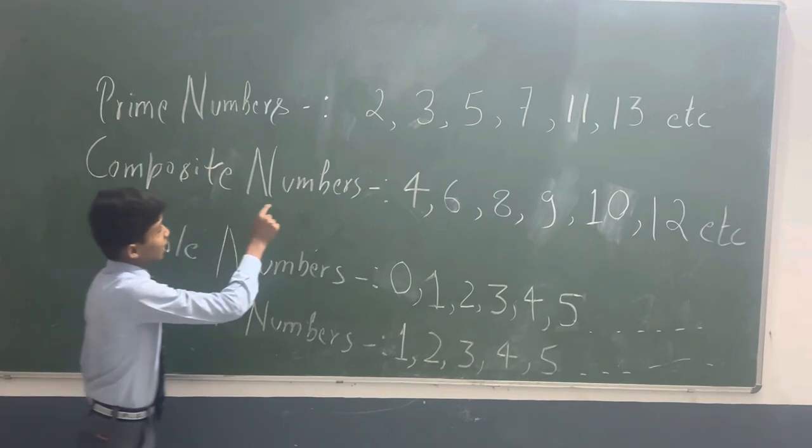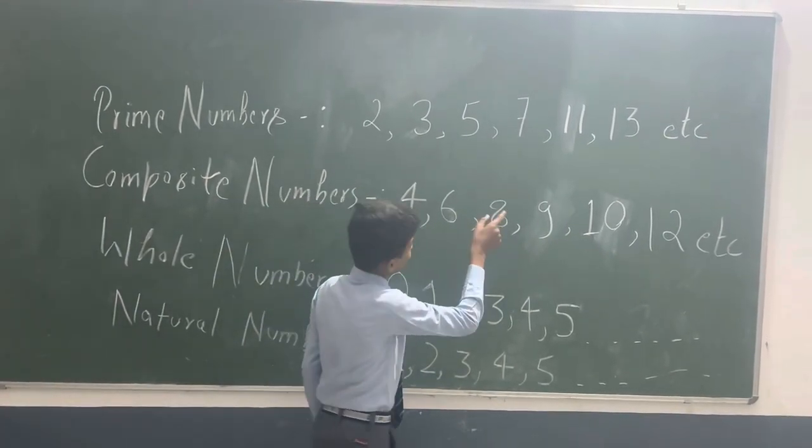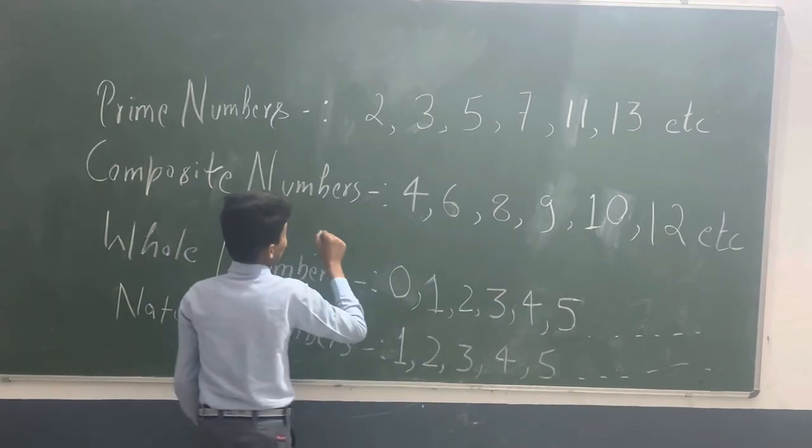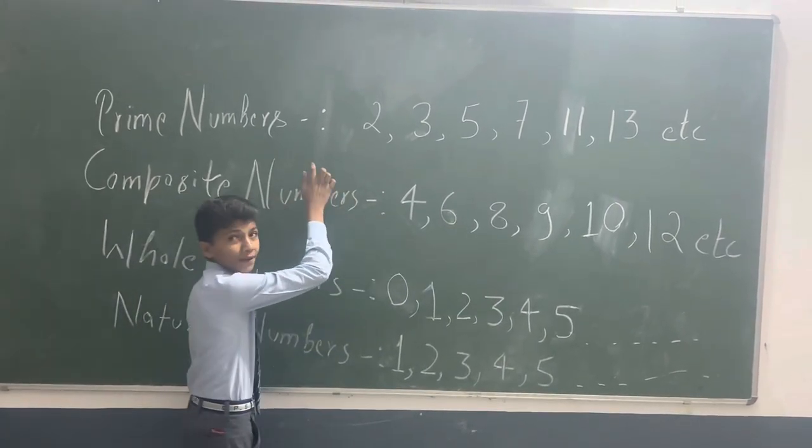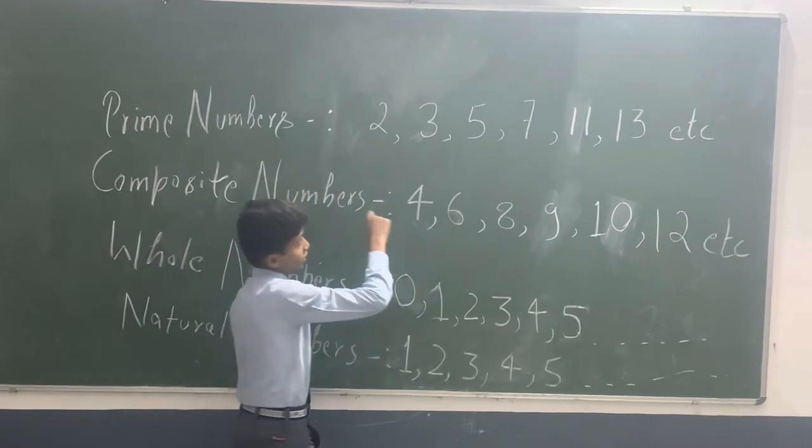What is prime number? The number which have only two factors, one and the number itself, are called prime numbers. For example, 2 is divisible by 1 or itself. 3 is divisible by 1 or itself, etc.